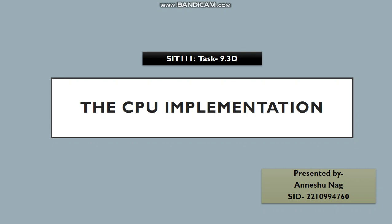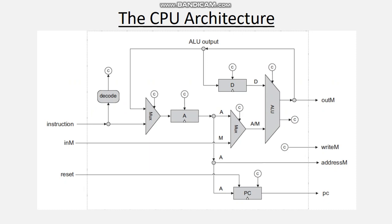Hello everyone, this is Anisio and today I'll be explaining the CPU implementation. Coming to the CPU architecture, this is the proposed design which we will be going to use to implement and explain the HDL code for the CPU. The CPU consists of several logic gates such as the A register, the ALU, the D register, the PC or program counter, and MUX or multiplexer. We already have knowledge about most of these logic gates from the previous tasks, which will make it quite easier for us to implement the CPU.